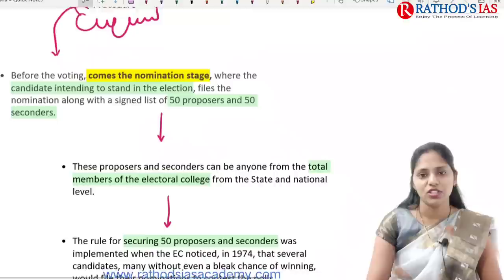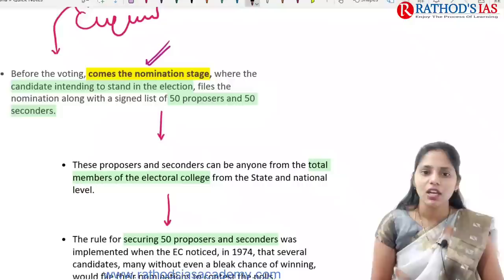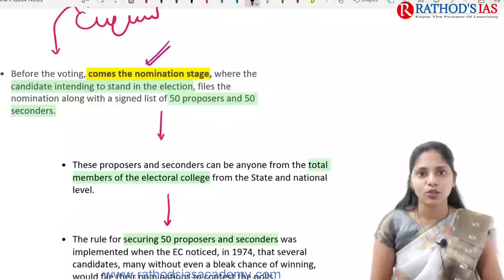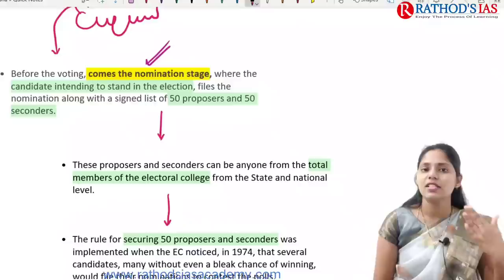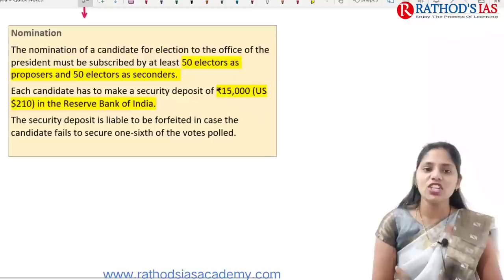At the nomination stage, at least 50 proposers and 50 seconders should sign on the list. These proposers and seconders can be anyone from the total members of the electoral college — from the national level like Lok Sabha and Rajya Sabha, as well as legislative assemblies of states and union territories. The nomination of a candidate must be subscribed by 50 electors as proposers and 50 electors as seconders.